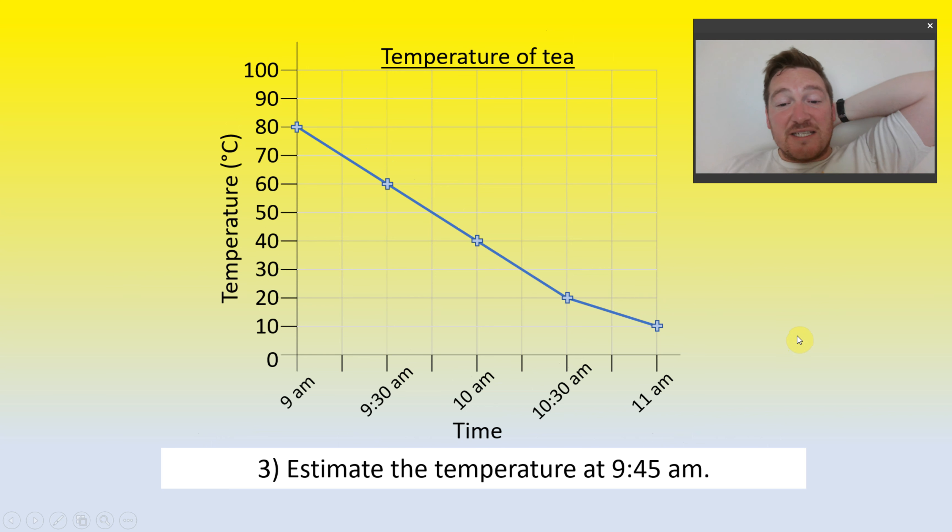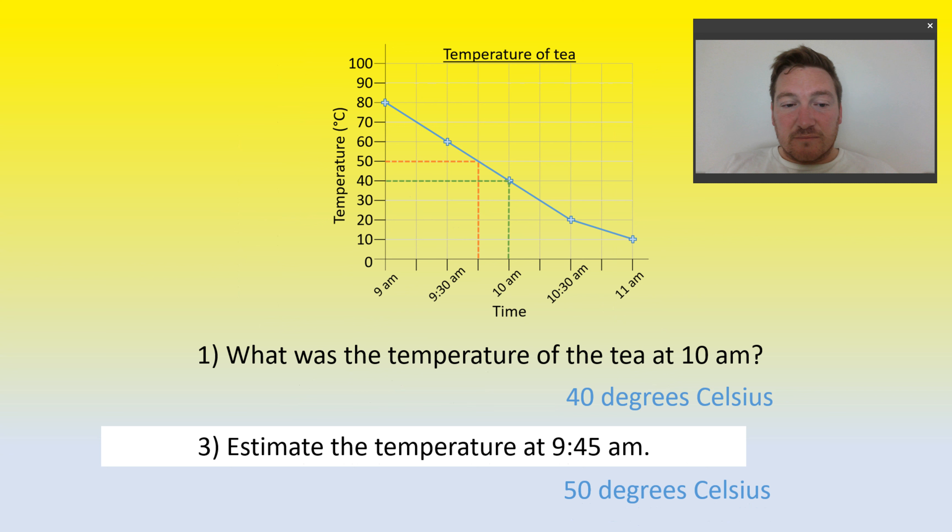And last question, estimate the temperature at 9:45 am. So find that time frame and then find out what temperature it roughly was. If you put 50 degrees you would be correct. Now the big difference between these two questions: what was versus estimate. What was is asking for a specific answer that has been given, like a retrieval question, whereas an estimate is a question where we need to use our knowledge and information on the screen to make a good educated guess.